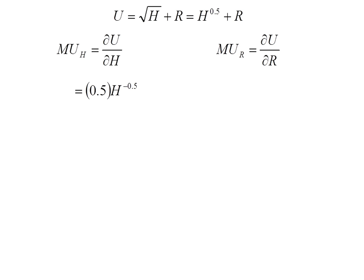Doing this with respect to H, the exponent comes down in front and we reduce the exponent by 1, giving us 0.5H to the negative 0.5. If you don't like that negative exponent, you could always put the H in the denominator and make the exponent positive.